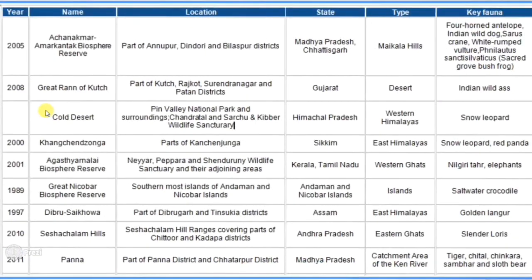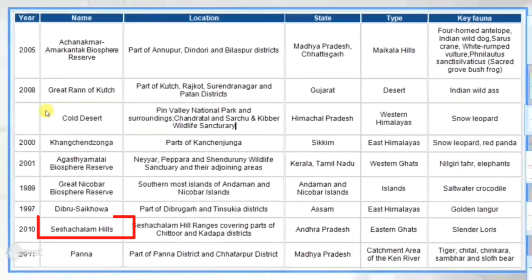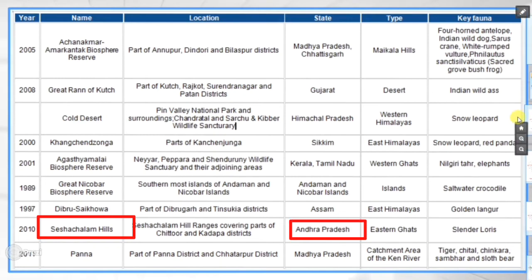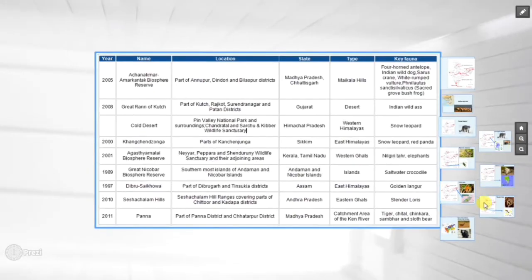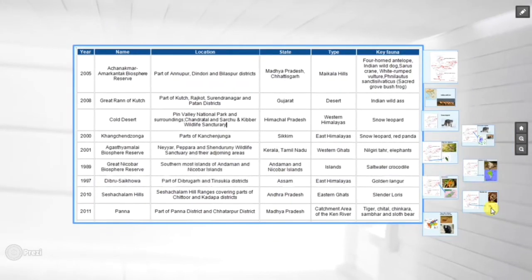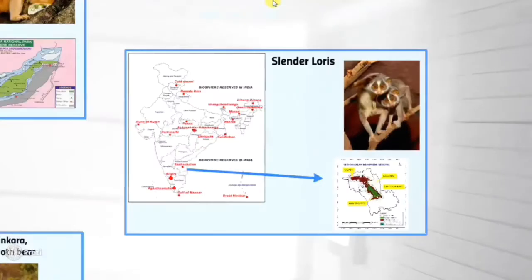Next biosphere reserve is Seshachalam Hills Biosphere Reserve. It is located in Andhra Pradesh, and the key fauna found here is the Slender Loris.